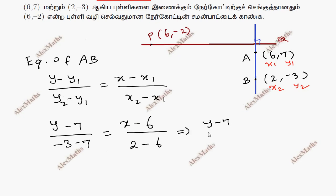Now, the denominator is (y - 7) by -10. This is (x - 6) by -4. Minus minus cut by 2, divide by 2 is 5. Now, cross multiply. (y - 7) times 2. 2y - 14 = (x - 6) into 5. So this is 5x - 30.